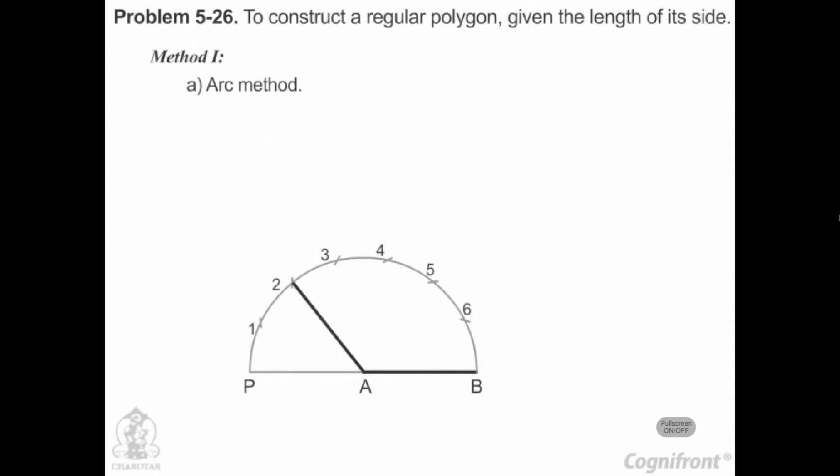Arc method. With center B and radius AB, draw an arc cutting the line A6 produced at C. With center C and the same radius, draw an arc cutting the line A5 produced at D.